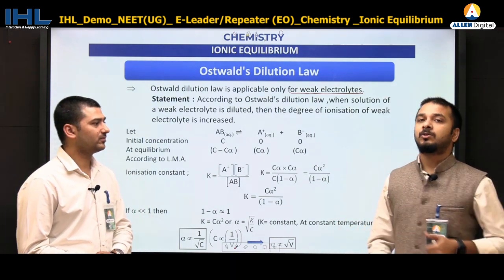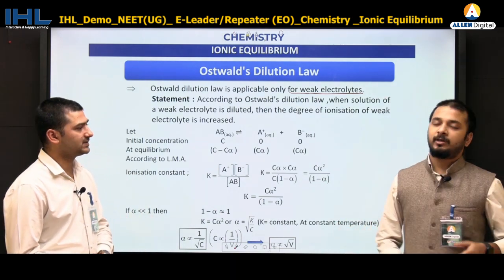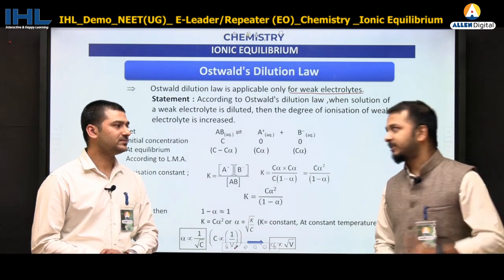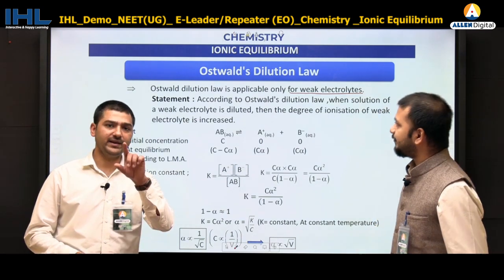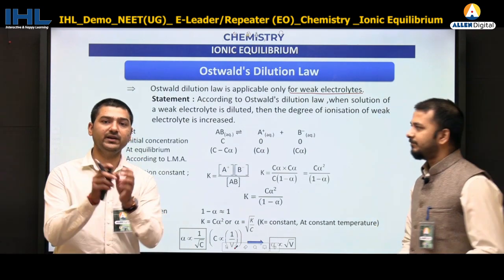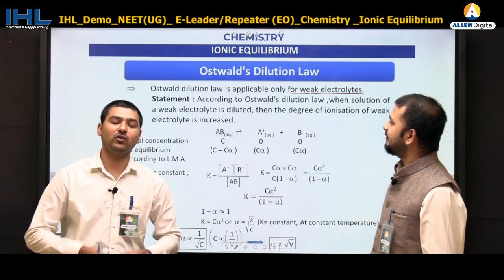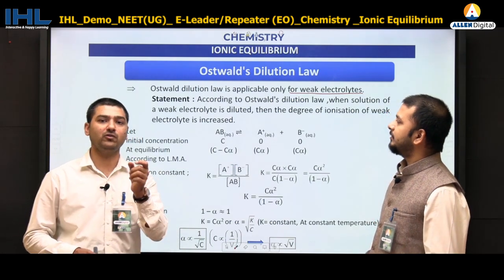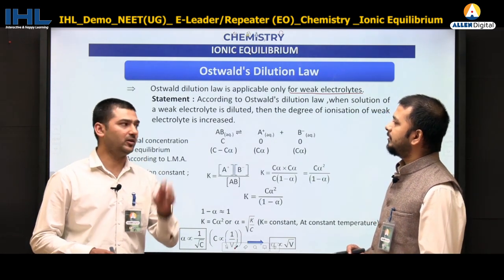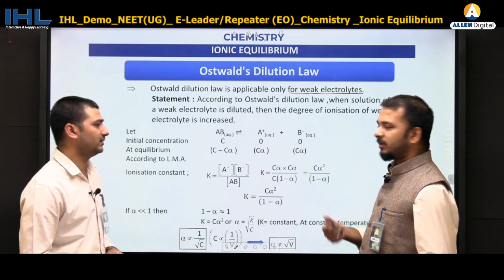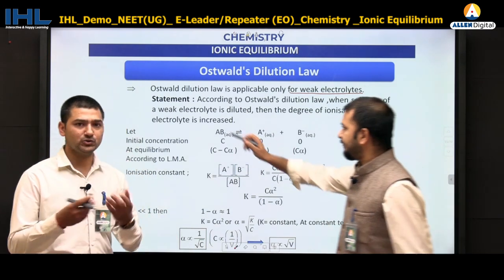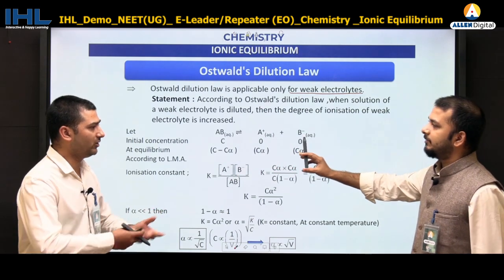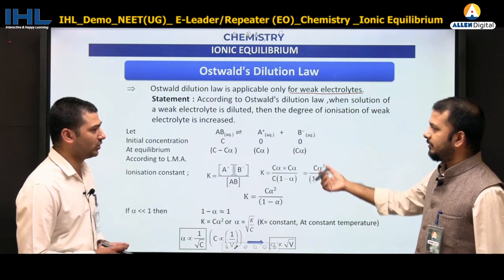What is Ostwald's law? Weak electrolytes are those for which the degree of ionization or degree of dissociation, alpha, remains less than 100% or less than 1. Examples include H₂S and some sparingly soluble solvents.